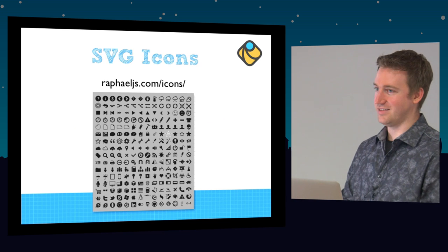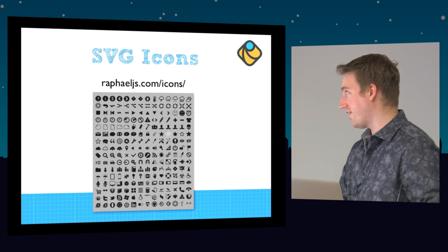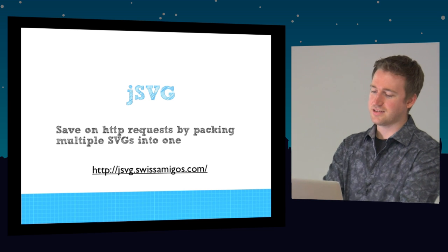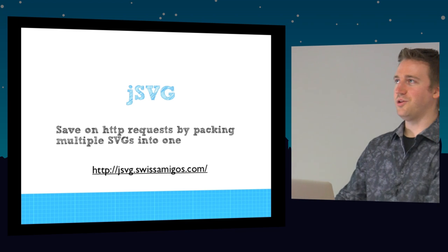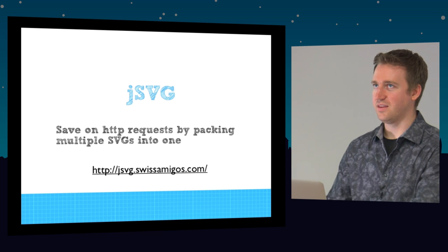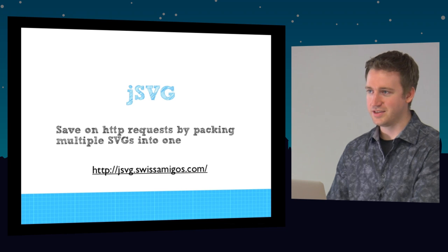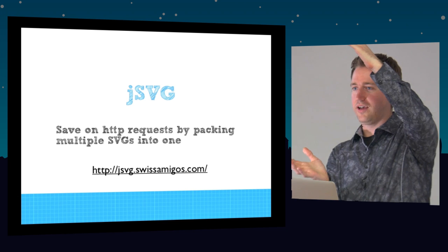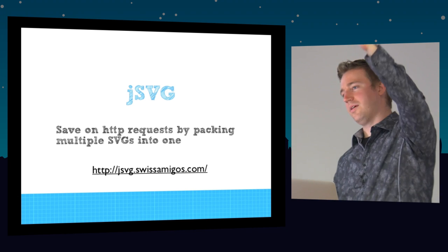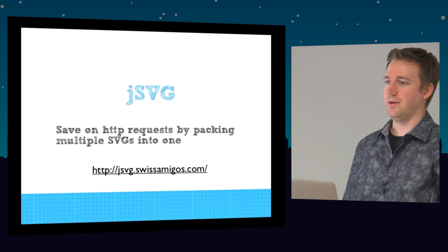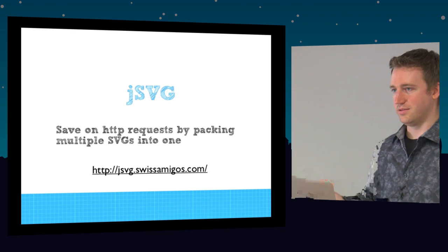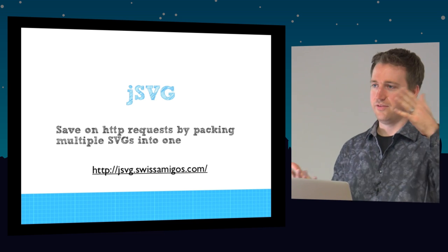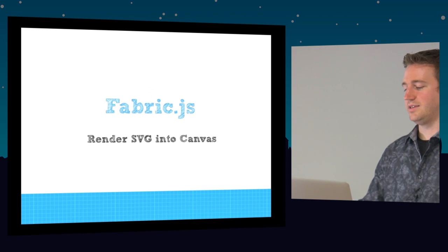Raphael has a set of icons, which are pretty cool. JSVG is interesting — you know how you minify and concat CSS or JavaScript? JSVG is kind of the same thing. You're concatenating all these SVG XML documents into one request, sending them down the pipe, and then using JavaScript to extract the individual SVGs out of the stack.